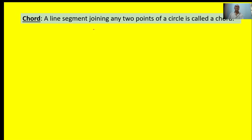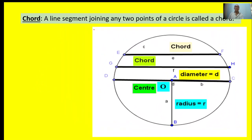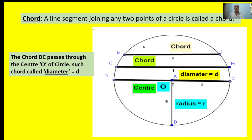A line segment joining any two points of a circle is called a chord. Here, the circle has three chords: EF is a chord, GH is a chord, DC is also a chord. But DC passes through the center of the circle; such a chord is called a diameter.